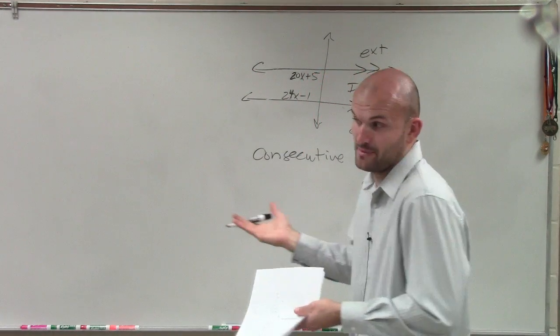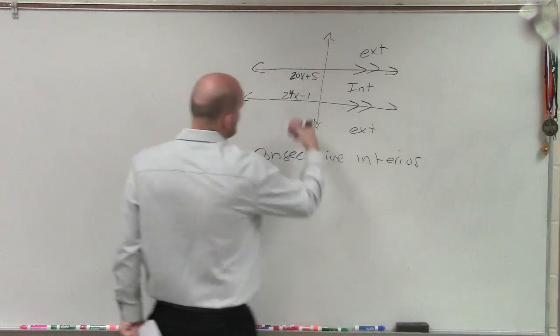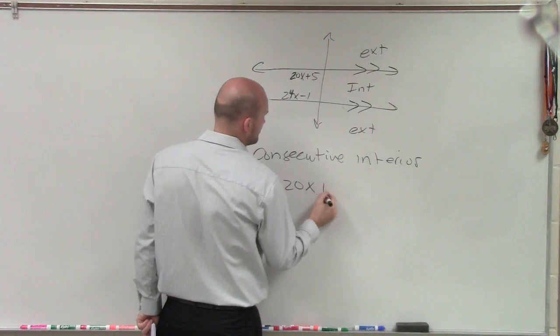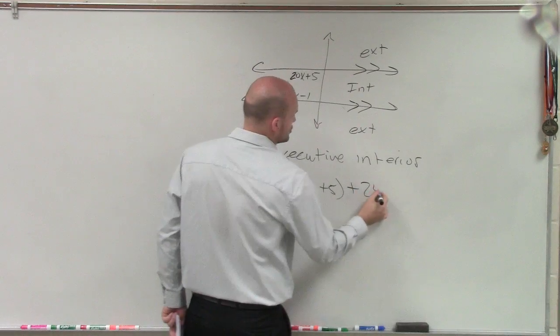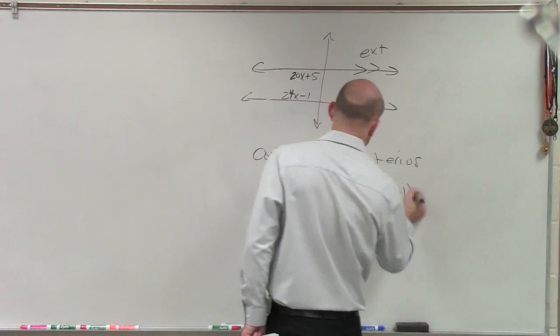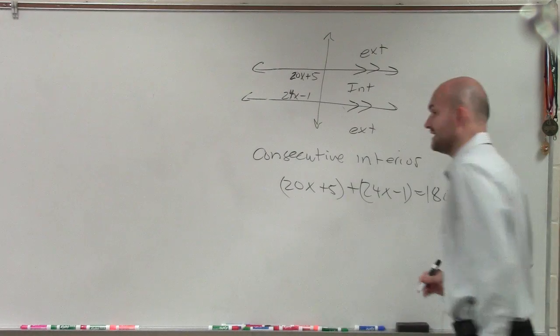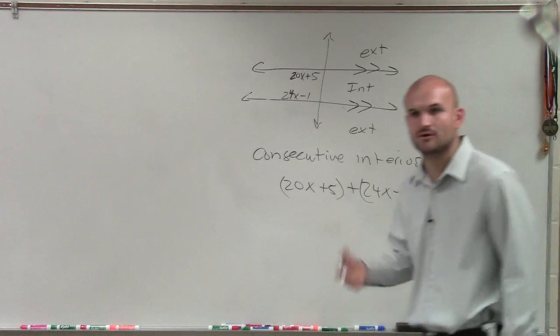Well, their sum is equal to 180, right? So therefore, you can say 20x plus 5 plus 24x minus 1 is equal to 180. The sum of the two angles is equal to 180.